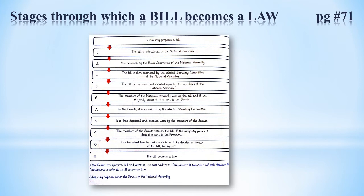Stage one: A ministry prepares a bill. Stage two: The bill is introduced in the National Assembly. Stage three: It is reviewed by the Rules Committee of the National Assembly — isse check kia jata hai ke ye according to law valid hai ya nahi. Stage four: The bill is then examined by the selected Standing Committee of the National Assembly, jo isse deeply examine karti hai.